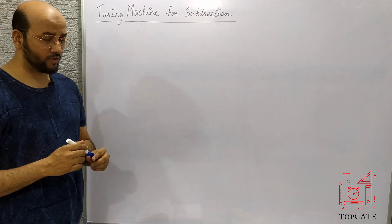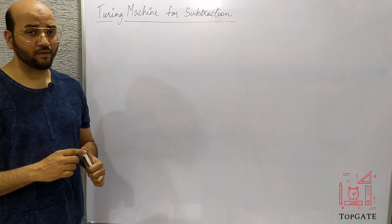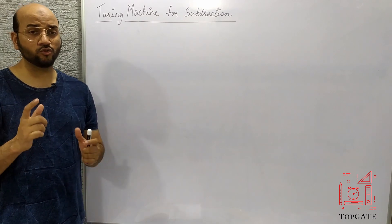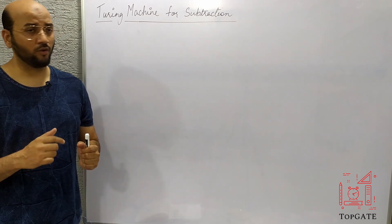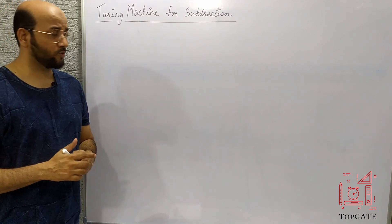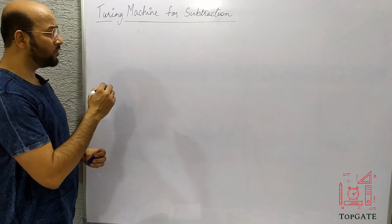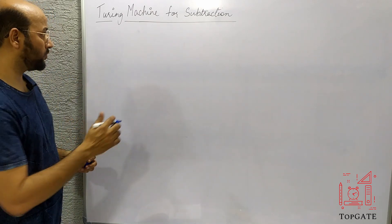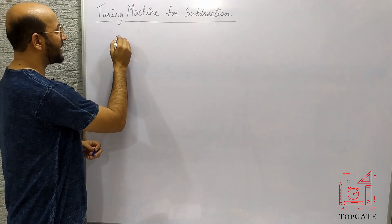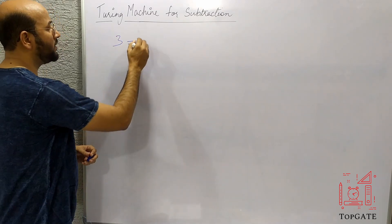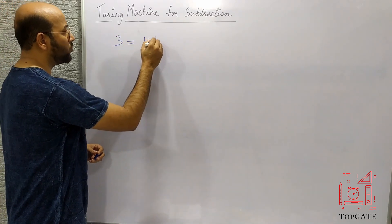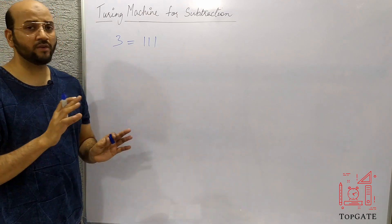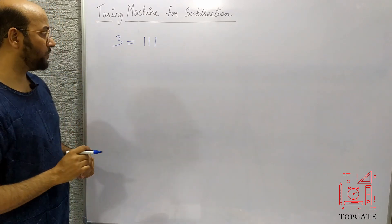In the last video when we discussed Turing machine as an adder, I told you that the problem of the Turing machine is that it does not know how to count things — it is not able to count things. So what we do, we simply represent the number in the form of unary. If we have the number 3, then in unary it will be 111. So any number we have, we will represent it in unary first and then we will subtract the two values.